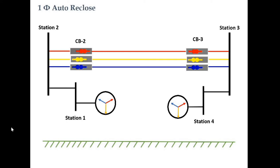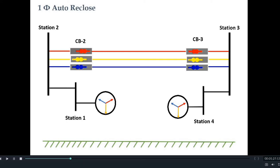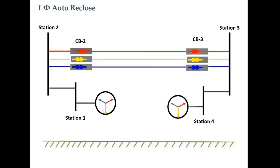In transmission lines, 70 to 80 percent of faults are of transient nature. To reduce the outage time due to such transient faults, auto reclosure schemes are used in transmission lines. However, when a fault persists in the line, after auto reclosure, if the relay senses a fault, it gives a trip command to the circuit breaker once again and the line trips. In such cases, we say auto reclosure is unsuccessful.